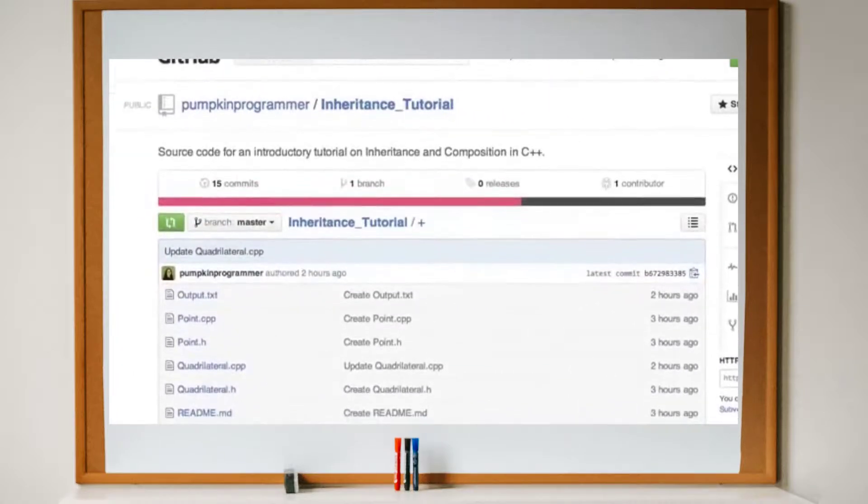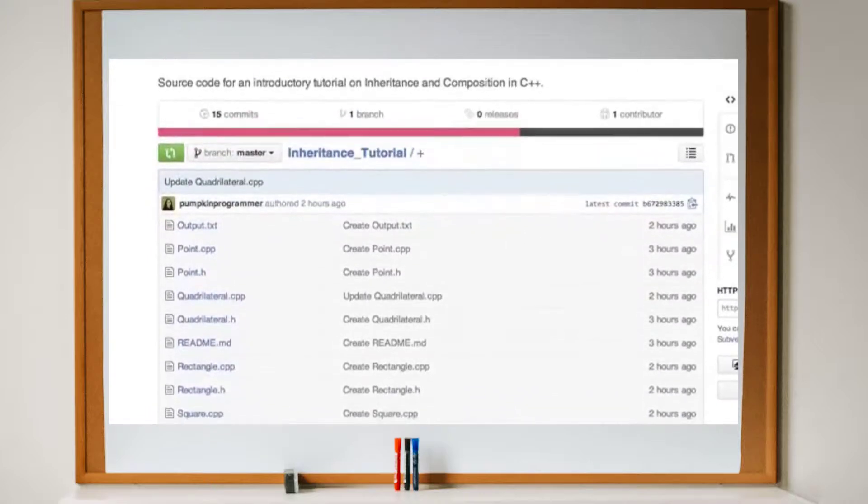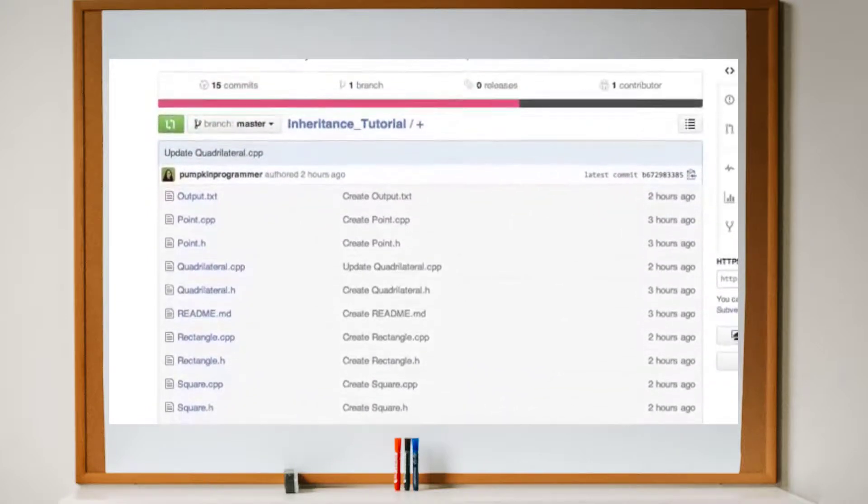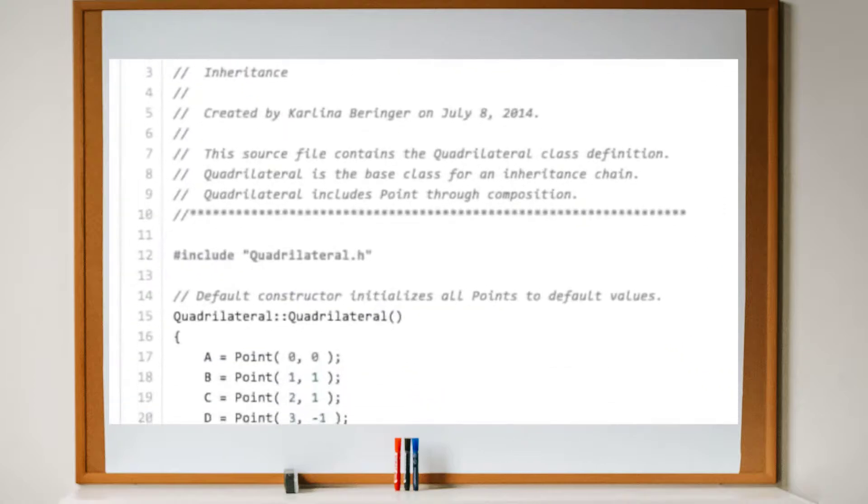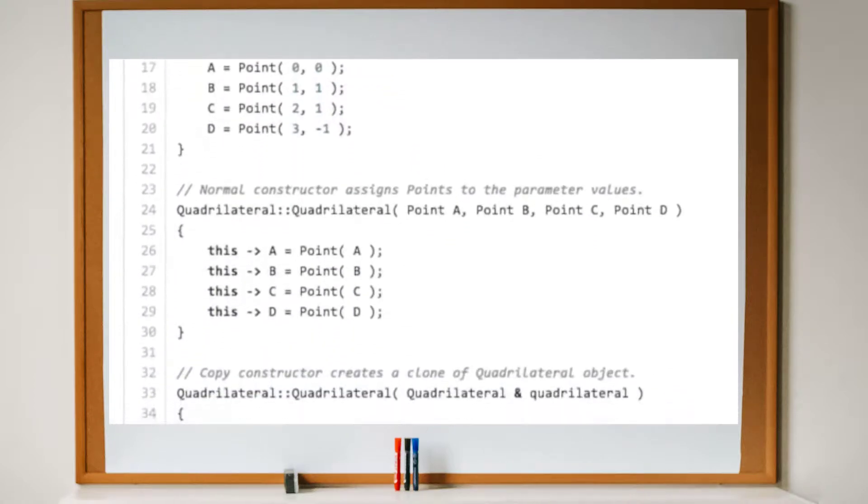To learn more about object-oriented programming in C++, please see the next video in this series, Polymorphism. To get the complete coding example for the tutorial you just watched, please visit the link in the video description. Thanks for watching.